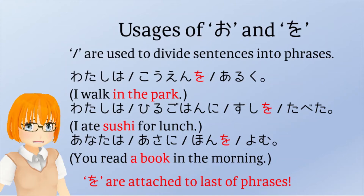By the way, the readings of these sentences are as follows. The first one is 私は公園を歩く. The second one is 私は昼ご飯に寿司を食べた. The last one is 私は朝に本を読む. The meanings of each sentence in English are written in parentheses.